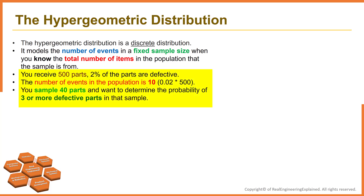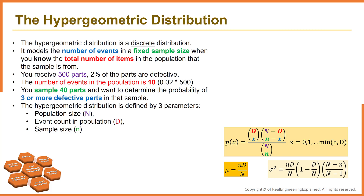Let's look at another example of hypergeometric distribution. You receive 500 parts. They tell you 2% of parts are defective, so the number of events in the population is 10 — that's 2% multiplied by 500. You sample 40 parts and want to know the probability of three or more defective parts in that sample. Before answering this question, let's define the hypergeometric probability distribution function, mean and variance.